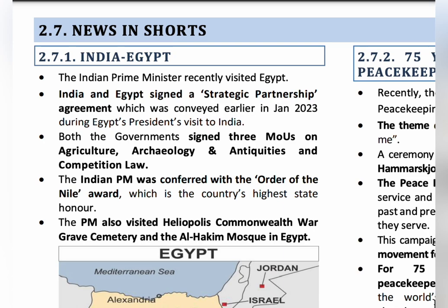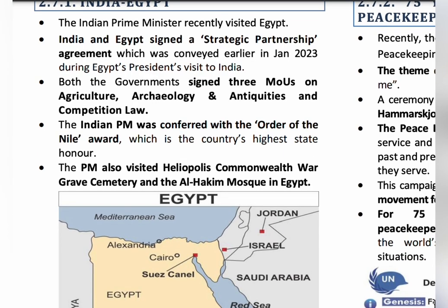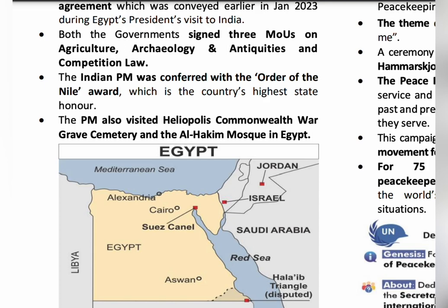Egypt is a good market for Indian defense goods. However, China's trade with Egypt is almost double that of India. For security and good economic cooperation, a Strategic Partnership Agreement was signed between India and Egypt. Three MoUs were signed on agriculture, archaeology and antiquities, and competition law. India's Prime Minister was also awarded Egypt's highest state honor — the Order of the Nile Award — given to persons who have performed useful service to the country.